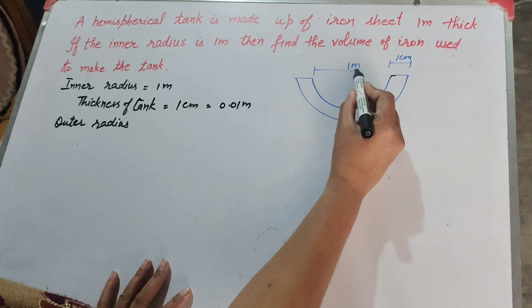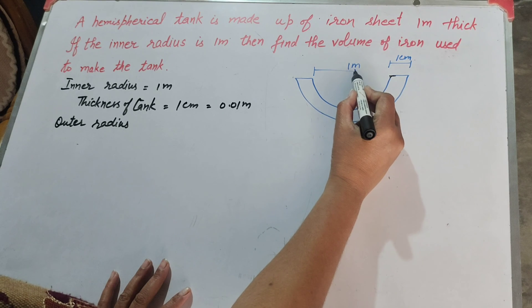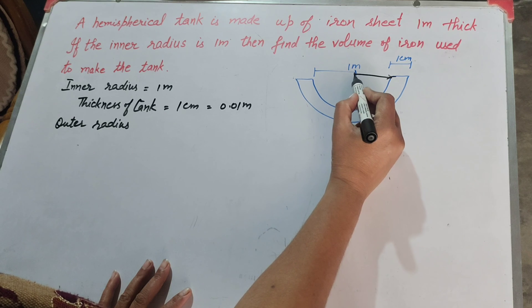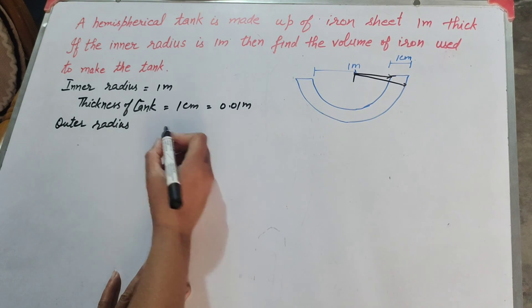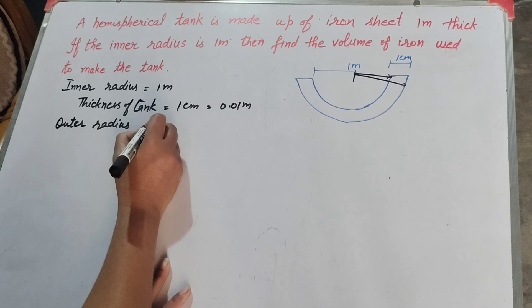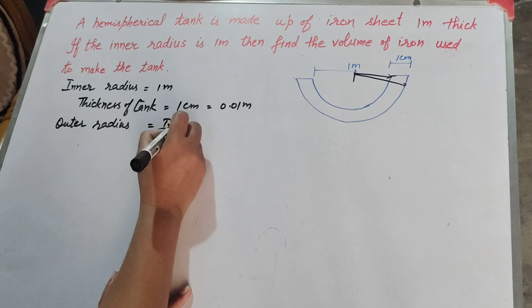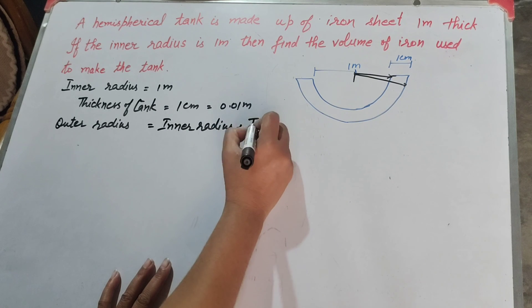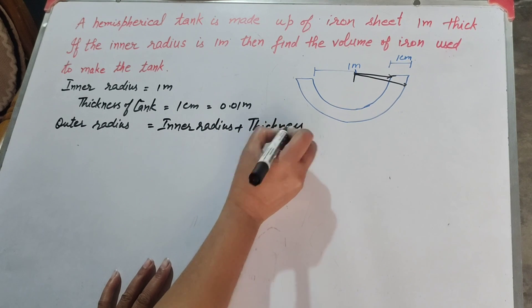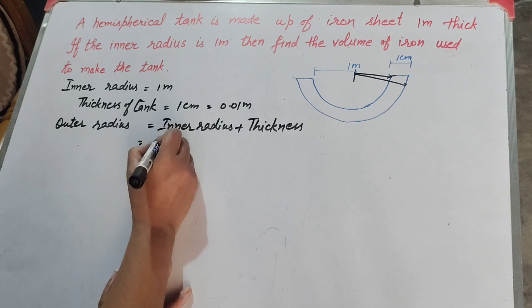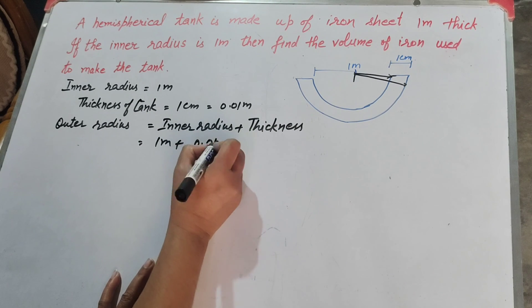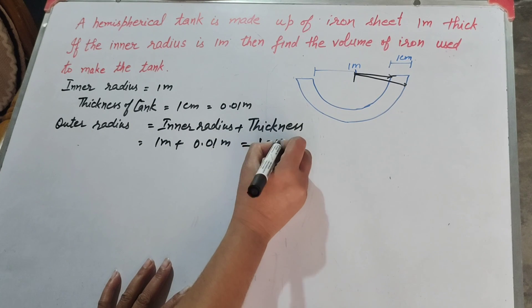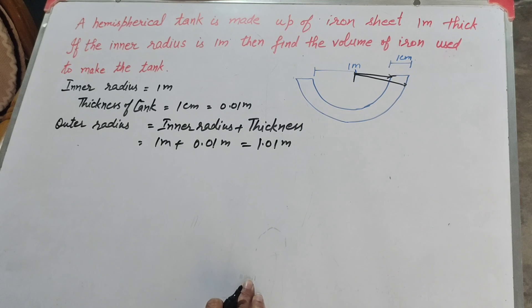To find the outer radius, we use: outer radius equals inner radius plus thickness. Inner radius is 1 meter plus thickness 0.01 meter, which equals 1.01 meter.